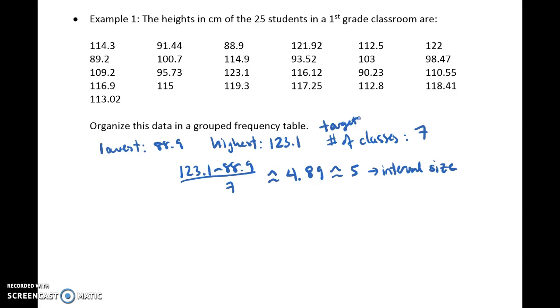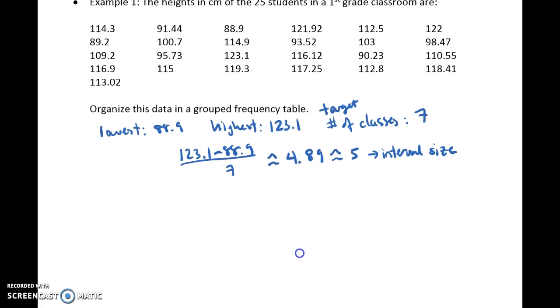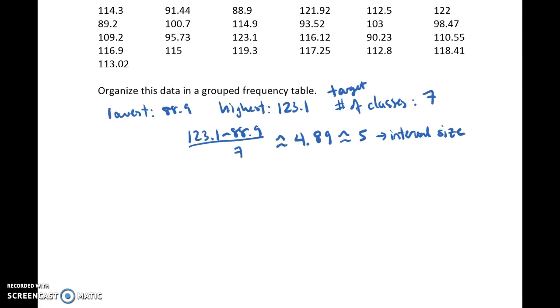So if you're like me, I like nice numbers. So I'm going to start at 85. So I can go 85 to 90, 90 to 95, etc. But if you want, you can start at 88 because that incorporates the smallest value. So what I'm going to do is make a table. I like to add an extra column. I like to put that tally column in again just to organize my work. So I'm going to put height, which is my data, in centimeters. I'm going to add in a tally column and then my frequency.